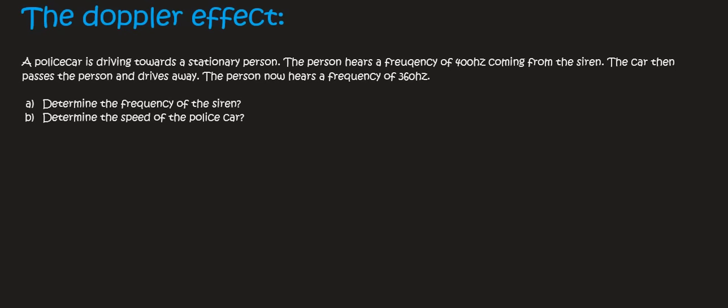In this question we have a police car that is driving towards a stationary person. The person hears a frequency of 400 hertz coming from the siren. The car then passes the person and drives away. The person now hears a frequency of 360. First question says, determine the frequency of the siren.